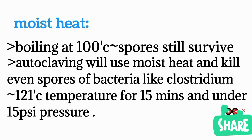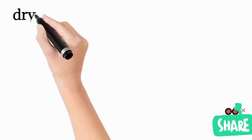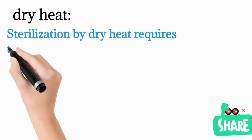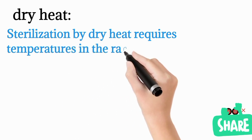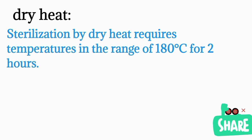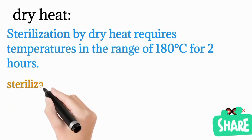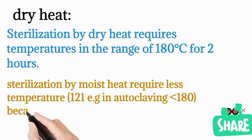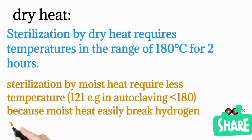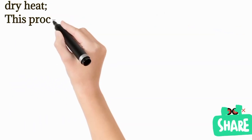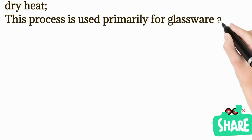Dry heat sterilization requires a higher temperature — about 180 degrees Celsius for about two hours — much higher temperature and longer time compared to moist heat at 121°C for 15 minutes. Moist heat requires less temperature because water breaks hydrogen bonds more easily. Dry heat is primarily used for glassware and is used less frequently than autoclaving.